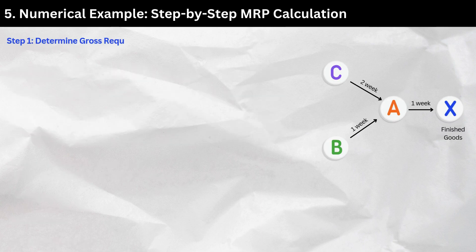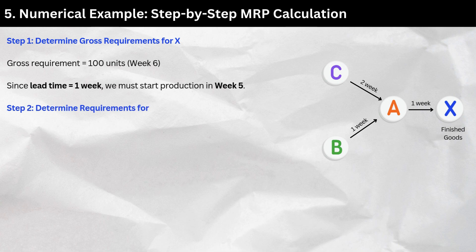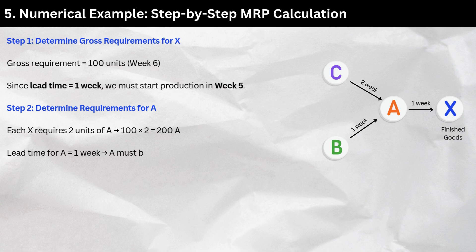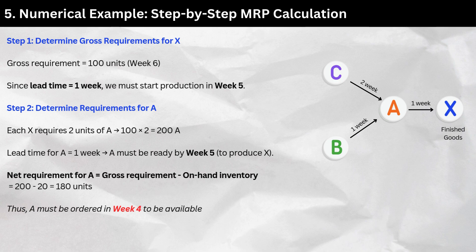Step 1 — Determine gross requirements for X. Gross requirement = 100 units in week 6. Since lead time = 1 week, we must start production in week 5. Step 2 — Determine requirements for A. Each X requires 2 units of A: 100 × 2 = 200 A. Lead time for A = 1 week, so A must be ready by week 5 to produce X. Net requirement for A = gross requirement − on-hand inventory = 200 − 20 = 180 units. Thus, A must be ordered in week 4 to be available by week 5.